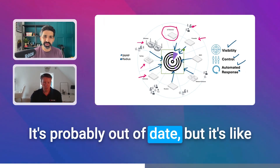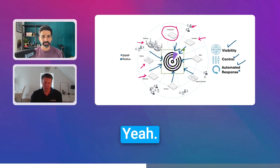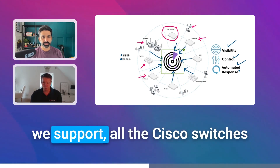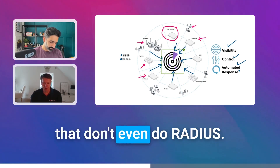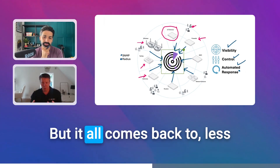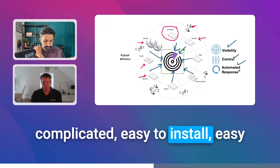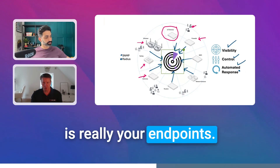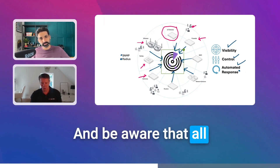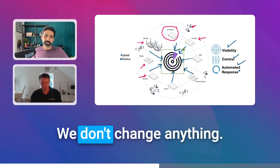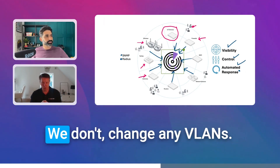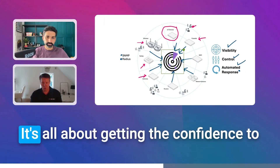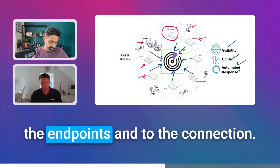I've got a statistic here — it's probably out of date, but it's like 170 vendors FortiNAC supports. Actually now it's like three and a half thousand different infrastructure components. We even support Cisco switches that don't do RADIUS. It all comes back to less complicated, easy to install, easy to get the visibility. Build your confidence that the endpoints are really your endpoints. And be aware that all of this is non-intrusive — we don't change anything, we don't interrupt anything, we don't change any VLANs, we don't kick anyone out.